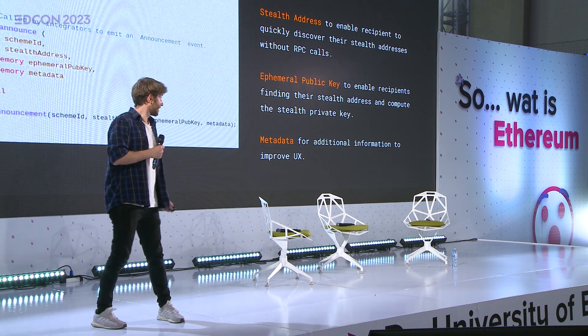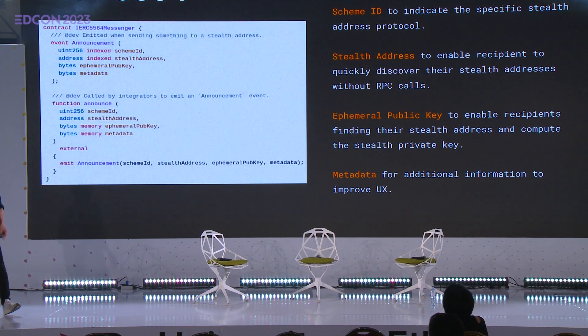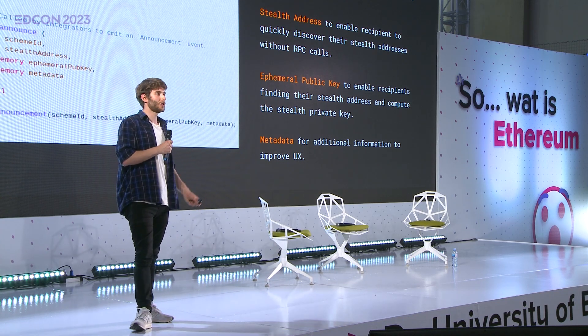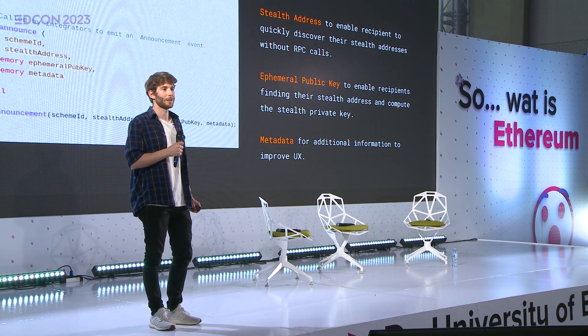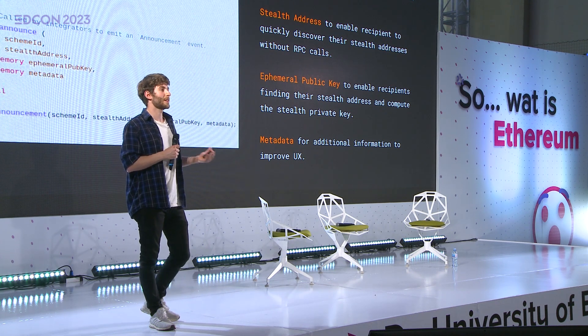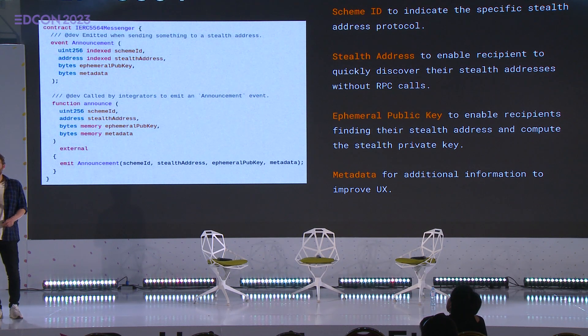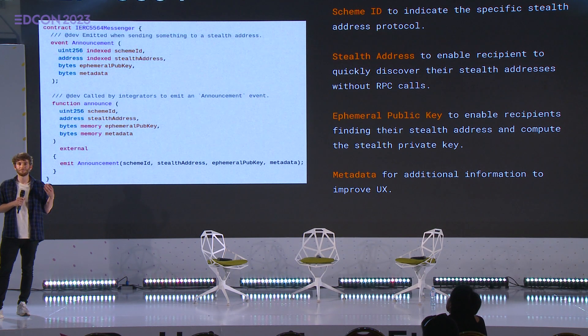For those who know some Solidity, you can directly tell how simple the contract is. It essentially only has an event — the announcement — that includes the information required by the recipient to first find the stealth address and second derive the private key to it, and a function that does nothing else but emit the event. The event includes a SchemeID, a stealth address, the ephemeral public key, and some metadata. The SchemeID indicates which stealth address protocol was used — for example, secp256k1 having SchemeID 1, and an elliptic curve pairing-based protocol having SchemeID 2.